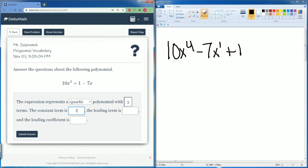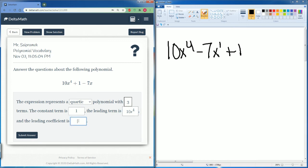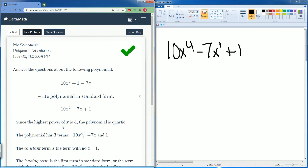The leading term is your 10x to the fourth. And then the leading coefficient would just be the number, which is just 10.